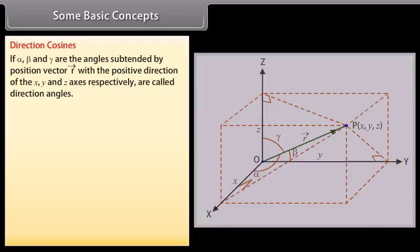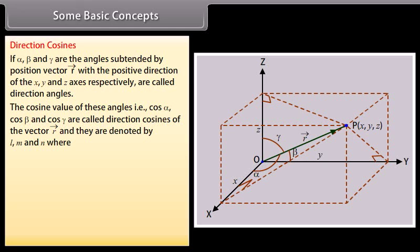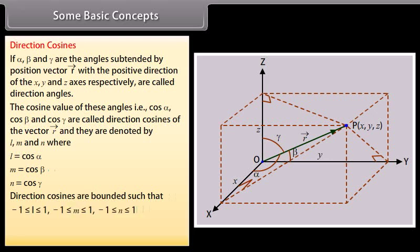Direction Cosines. If alpha, beta, and gamma are the angles subtended by position vector R with the positive direction of X, Y, and Z axes respectively, they are called direction angles. The cosine values of these angles — cos alpha, cos beta, and cos gamma — are called direction cosines of vector R and are denoted by L, M, and N, where L equals cos alpha, M equals cos beta, N equals cos gamma. Direction cosines are bounded such that minus 1 ≤ L ≤ 1, minus 1 ≤ M ≤ 1, minus 1 ≤ N ≤ 1, and they are connected by the formula L² + M² + N² = 1.